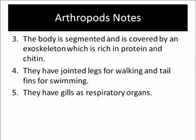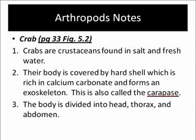Prawns have jointed legs for walking and a tail fin for swimming. The crab is also in this group — it's also a crustacean and can be found on page 33, figure 5.2 of your textbook, and that also needs to be added to your notes. Crabs are crustaceans found in fresh and salt water. Their body is covered with a hard shell — an exoskeleton — which is rich in calcium carbonate, and that also forms their exoskeleton.